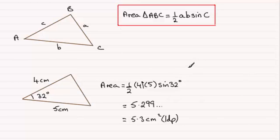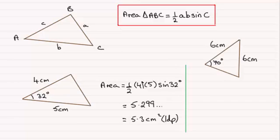Now I've got one here that you might like to try. There it is. A triangle with two sides, 6cm and 6cm, this angle is 70 degrees. Have a go at that, just give you a moment to pause the video.